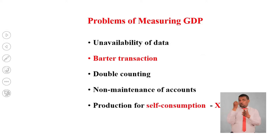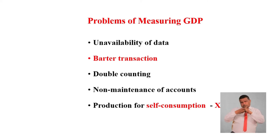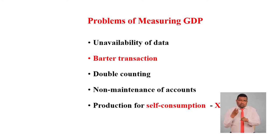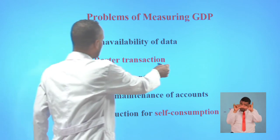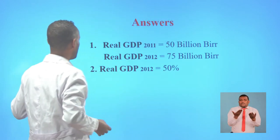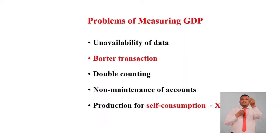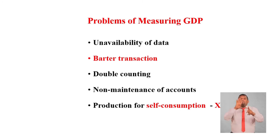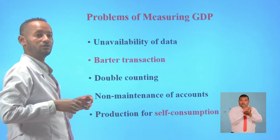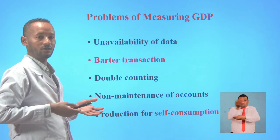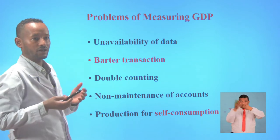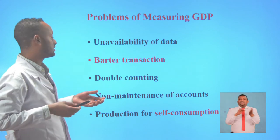Now let's see the problems of measuring GDP and GNP. One problem is unavailability of data — it is difficult to get perfect information from different resources. Another problem is barter transactions; barter is trading goods for goods. For example, most farmers are engaged in barter transactions, exchanging their outputs for other outputs such as wheat for teff, or teff for other goods.